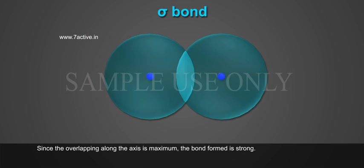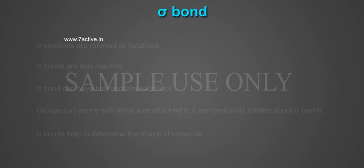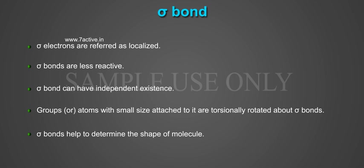Since the overlapping along the axis is maximum, the bond formed is strong. Sigma electrons are referred to as localized. Sigma bonds are less reactive. Sigma bonds can have independent existence.